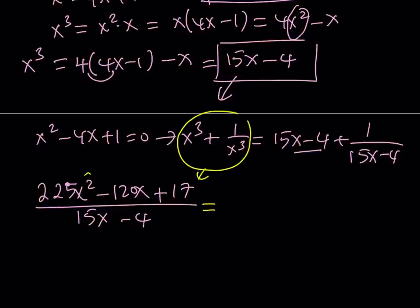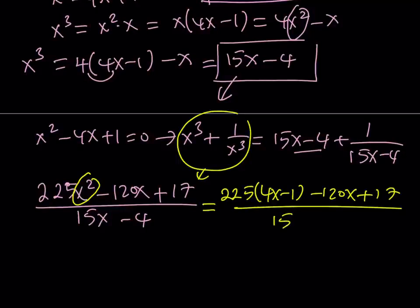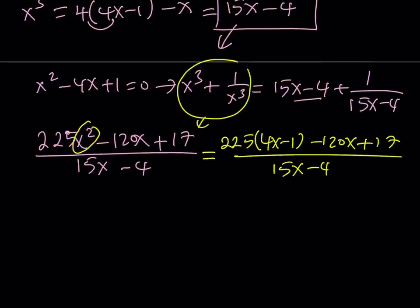And then, of course, you can replace x squared with 4x minus 1 again. And that's going to give you 225 times 4x minus 1, and then minus 120x plus 17 divided by 15x minus 4. When you distribute this, you're going to get 900x. Subtract 120. You're going to get 780x minus 225 plus 17. That's going to give you negative 208 divided by 15x minus 4.